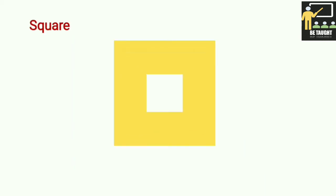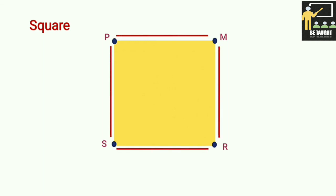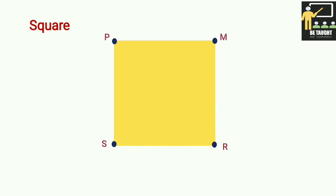Square: A square has four vertices and four sides. P, M, S, R are the vertices of the square. All the sides of a square are equal in length, and all its angles are right angles.